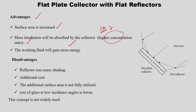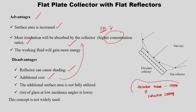On the disadvantages side, though it increases surface area for collection, it can also cause a shading effect. There is additional cost due to the addition of reflectors. However, this may be a trade-off: if you can gain the same energy by providing a reflector — which is just a mirror — compared to using selective coatings on copper absorber tubes, the reflector may be advantageous. The cost is a trade-off between how much energy you gain with or without reflectors.